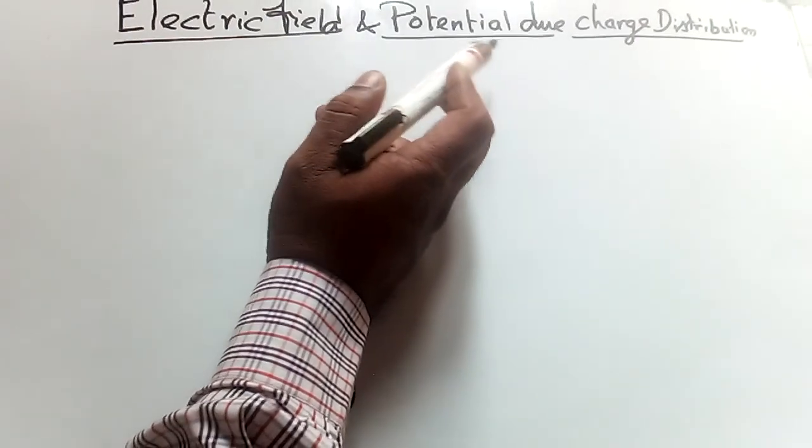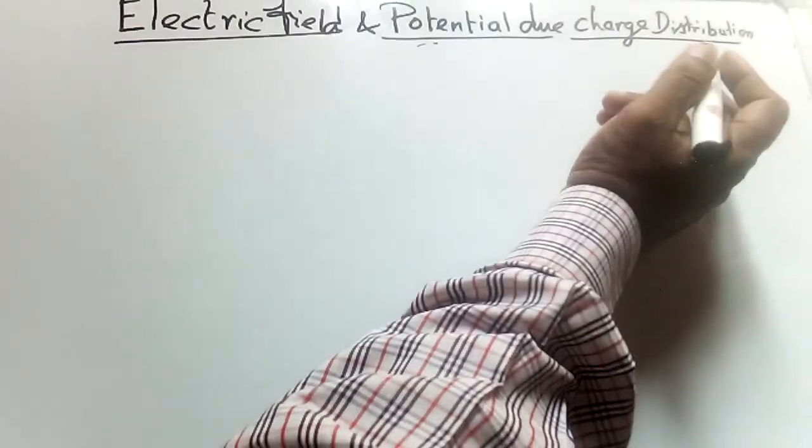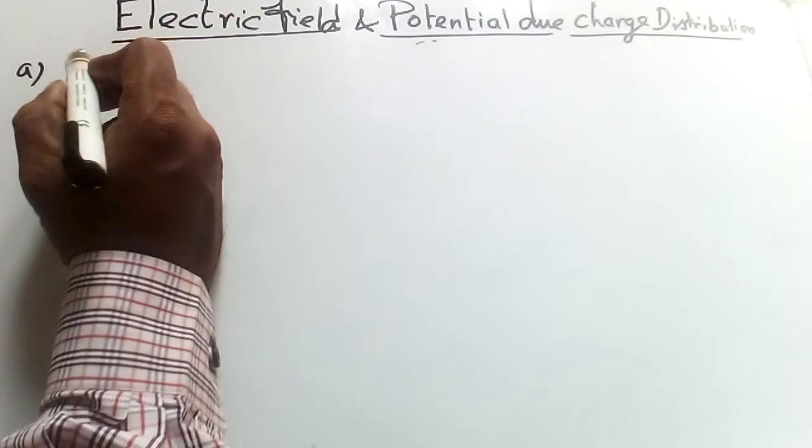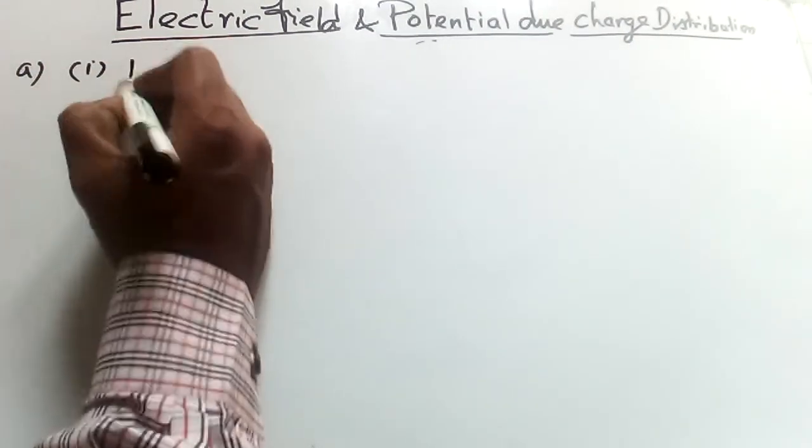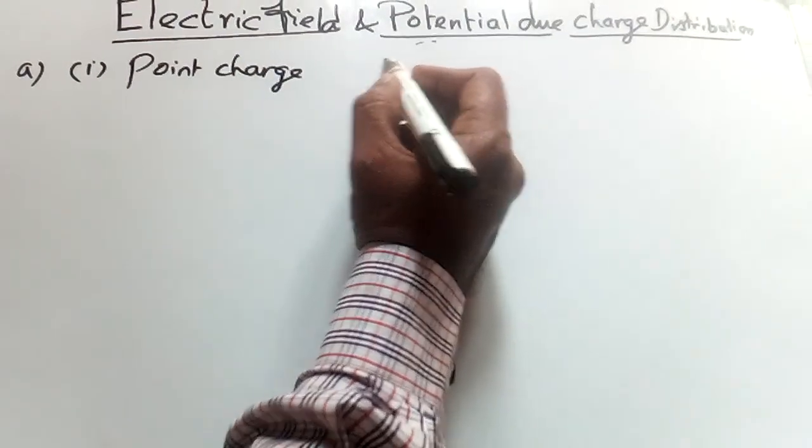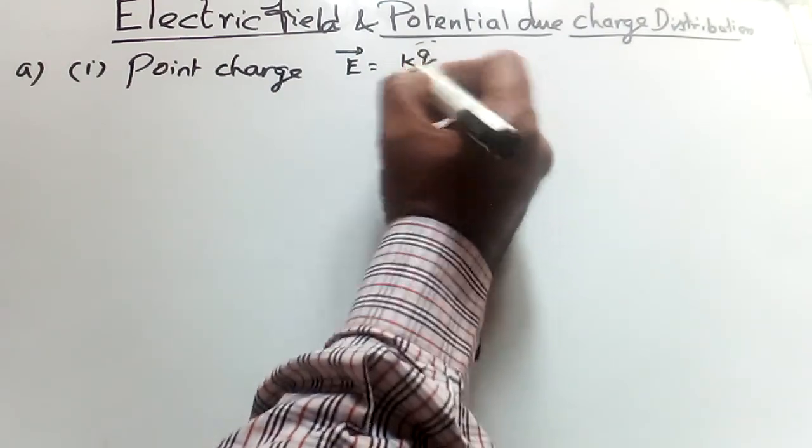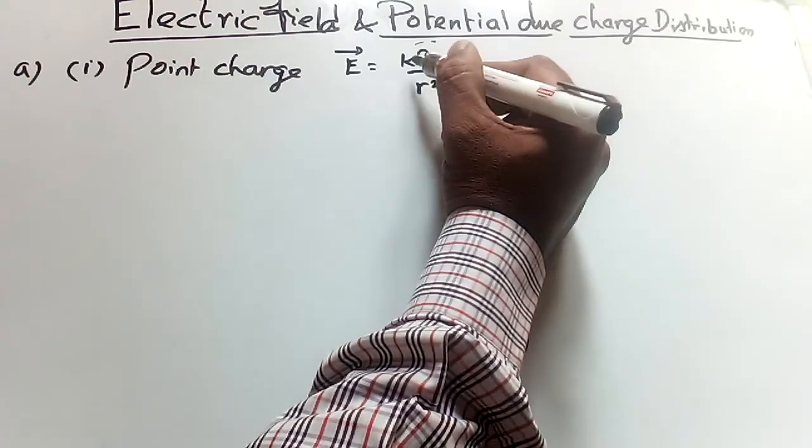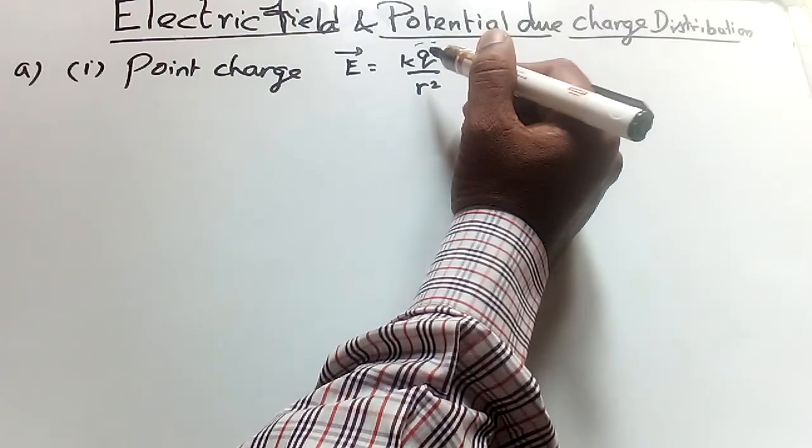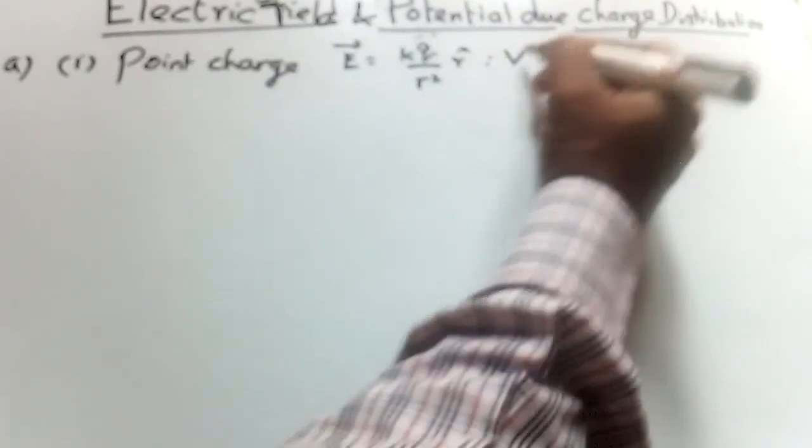Electric field and potential due to charge distribution. For point charge, electric field E equals K Q by R square R cap, where K is 1 by 4 pi epsilon naught in vacuum, and V equals K Q by R.